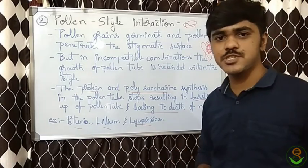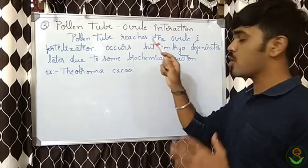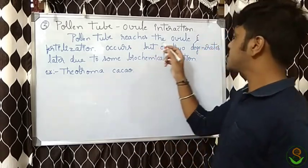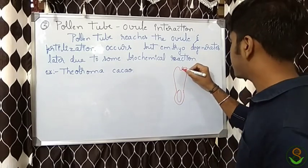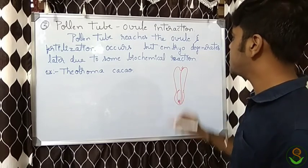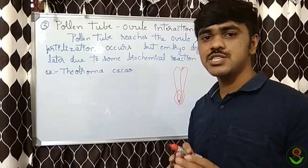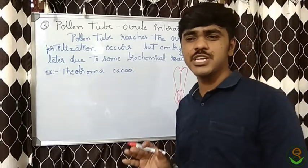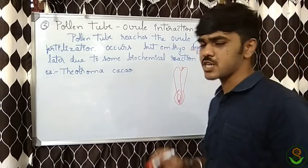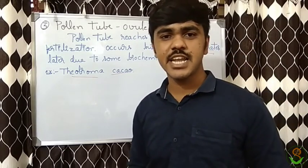The last reaction is pollen tube-ovule interactions. Here, pollen germinates at the stigmatic surface, pollen tube growth occurs, and the tube reaches the ovule — but the embryo degenerates. The exact reason for the degeneration is not known; some biochemical reactions take place there causing it to degenerate. An example is Theobroma cacao. With this we end this class; in the next class we shall see the male sterility concept.